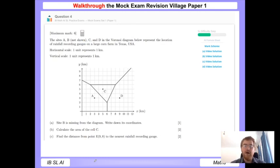First, site B is missing from the diagram and we need to write down its coordinates for one mark. This line represents the perpendicular bisector of C and some point B, where B and C have to be the same distance away. This is one square away from this line, so point B needs to also be one square away on the other side.